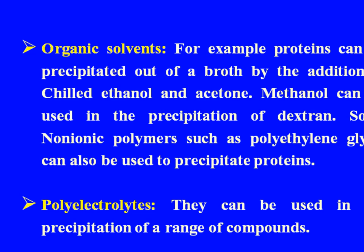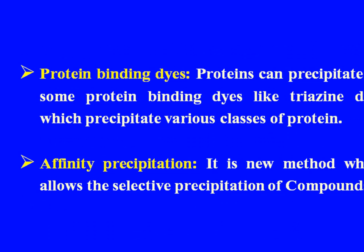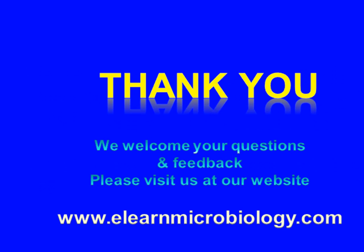Methanol can be used in the precipitation of dextrin. Some non-ionic polymers such as polyethylene glycol can also be used to precipitate proteins. Polyelectrolytes can be used in the precipitation of a range of compounds. Protein-binding dyes such as triazine dyes can precipitate various classes of protein. Finally, affinity precipitation is a newer method that allows selective precipitation of compounds. Thank you — please visit us at www.elearnmicrobiology.com.